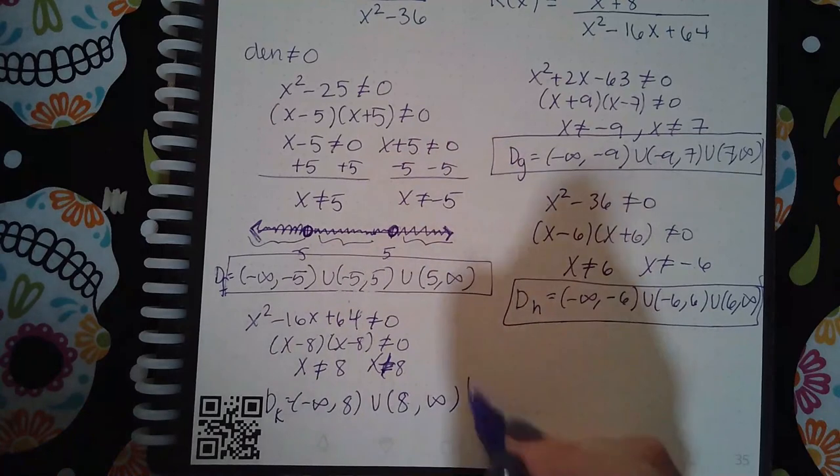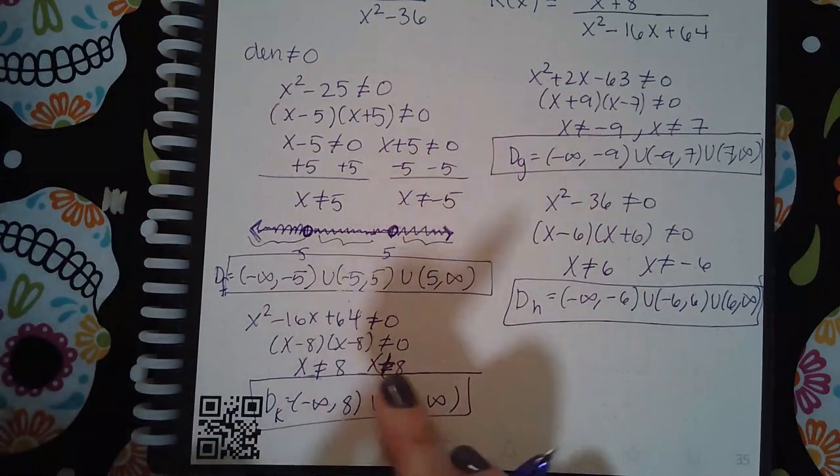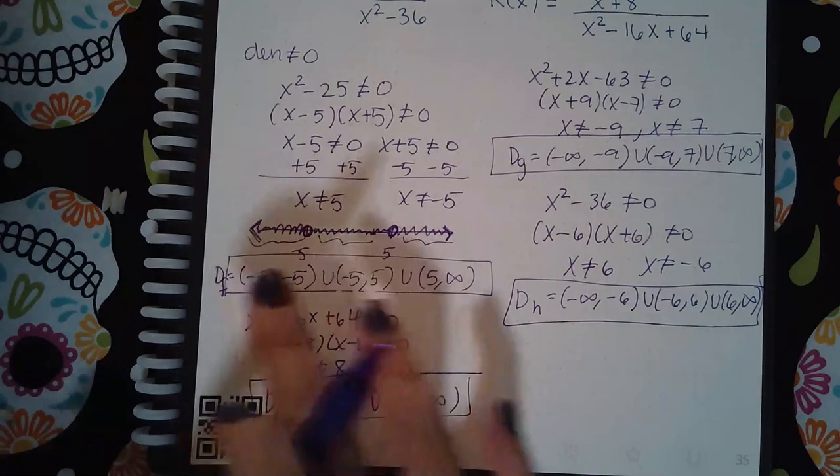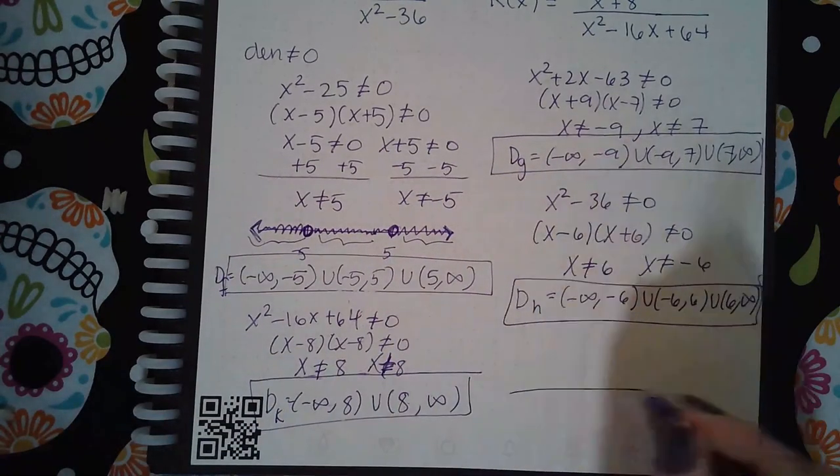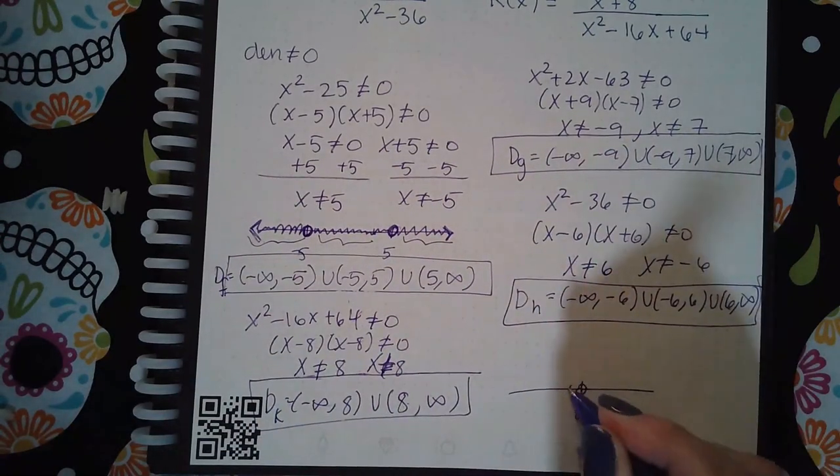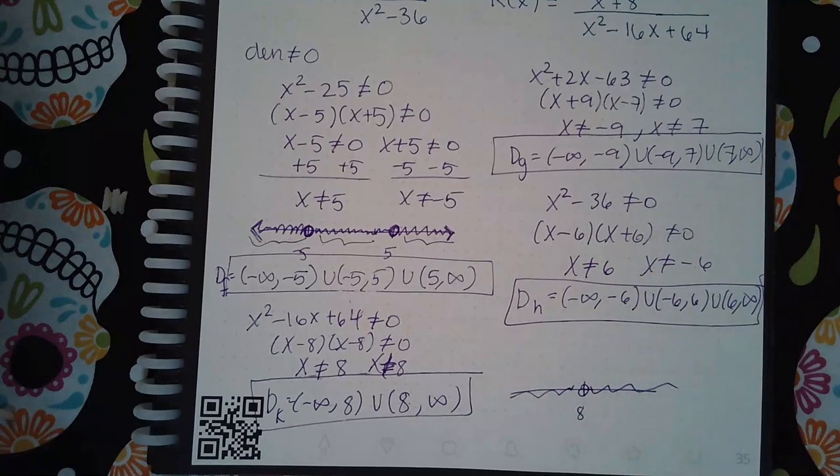So I just wanted you to see what happens if the factors are the same, and you get the same number. You don't have three pieces anymore. Your number line is here, here's eight, got a hole left and right. There's only two sections for that interval.